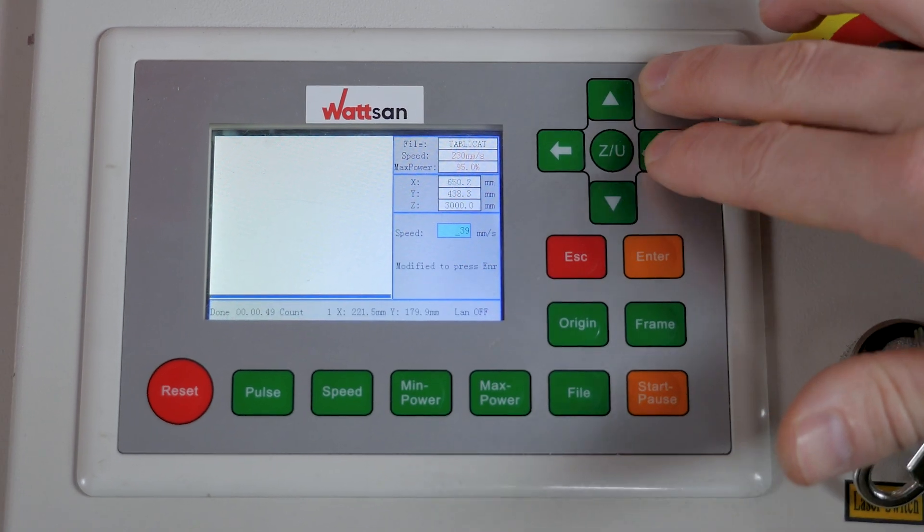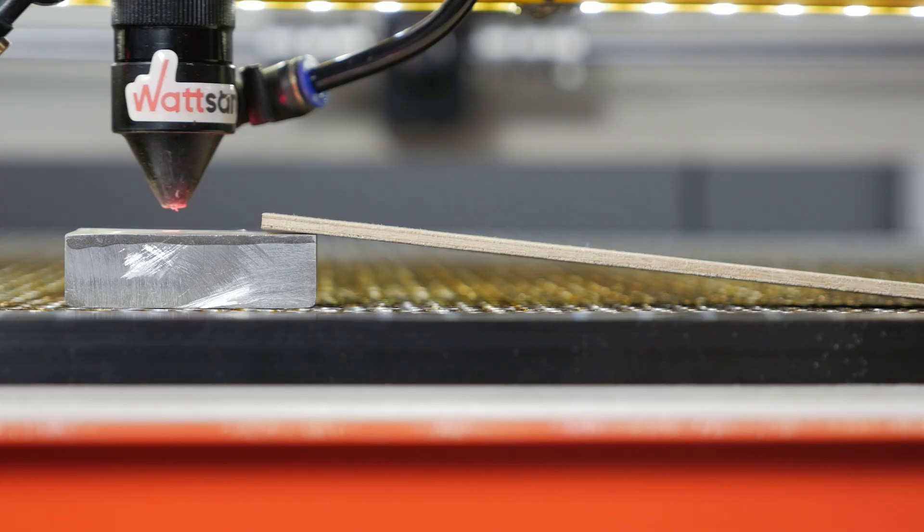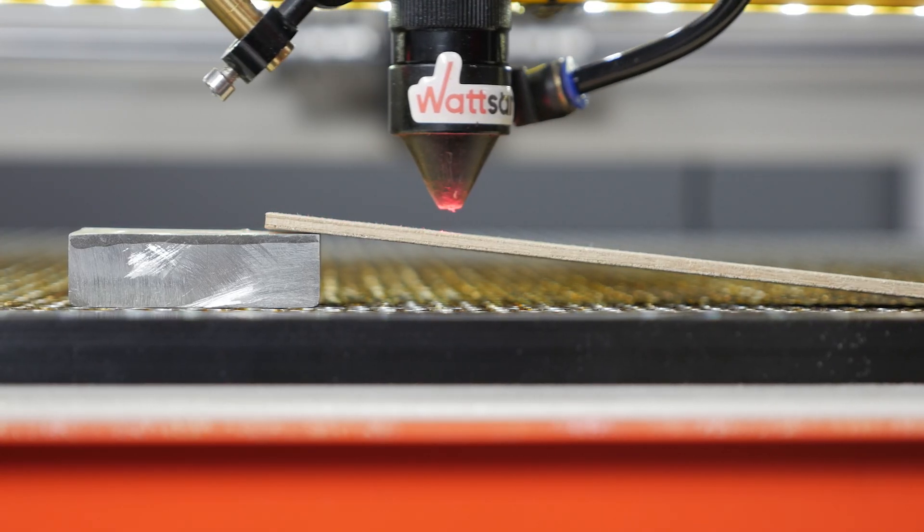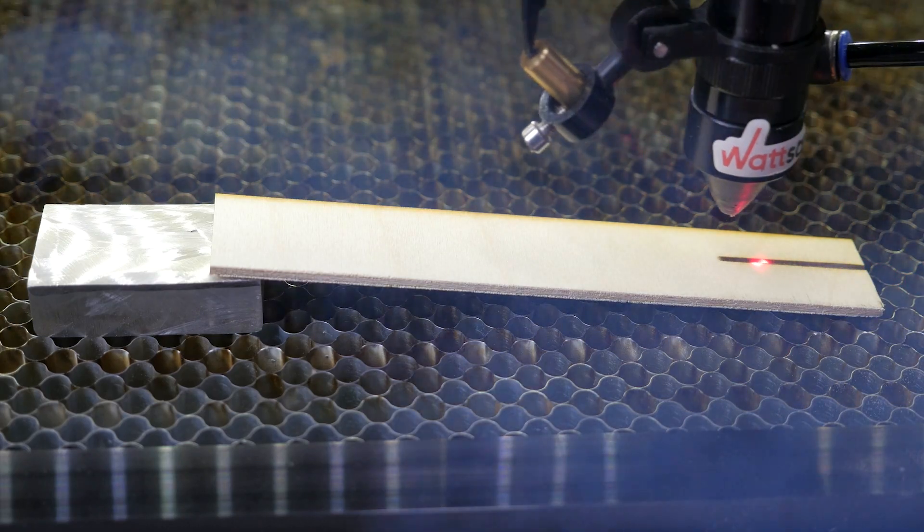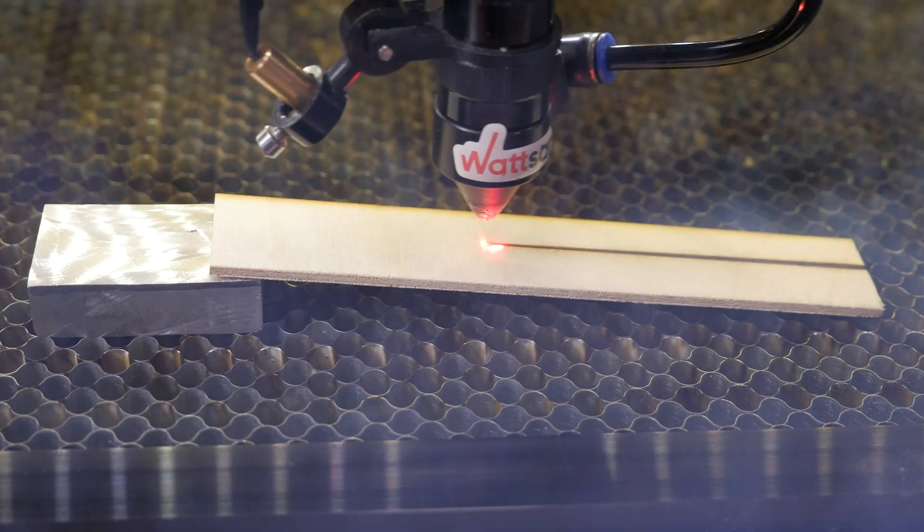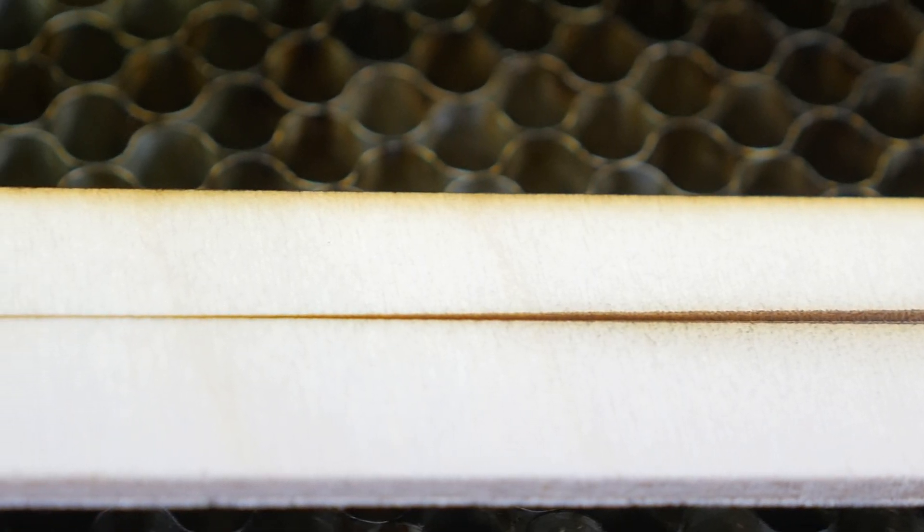On the controller, select a low travel speed and medium emission power to avoid burning through the workpiece. Press pulse and move the laser head along our workpiece from the bottom to the top.